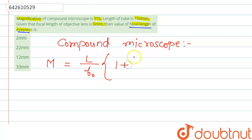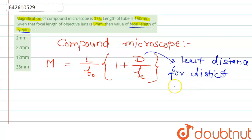Here d is the least distance for distinct vision, and the value of d is 25 centimeter.